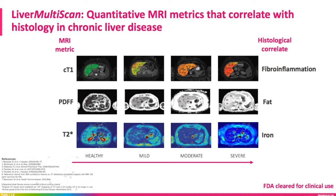Here are some examples showing four different cases with all three metrics provided by Liver Multi-Scan — a look at the progression of disease activity. On the first row is fibroinflammatory activity. Going from left to right, we can see on the first column a healthy patient; on the second, a patient with mildly elevated fibroinflammatory liver activity; on the third column, a patient with significant fibroinflammatory liver activity; and finally, on the far right, a case of a patient with severe fibroinflammatory liver activity.